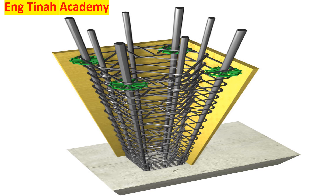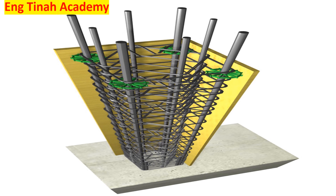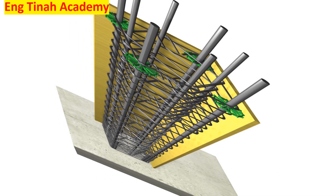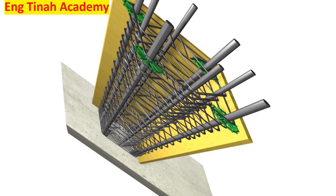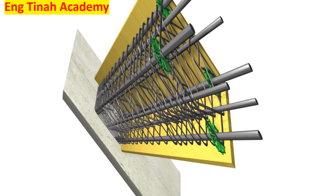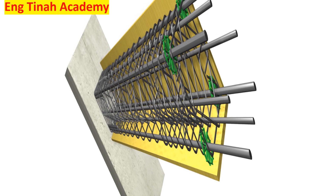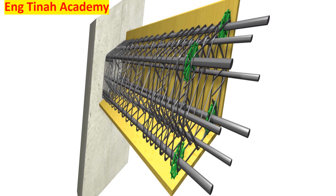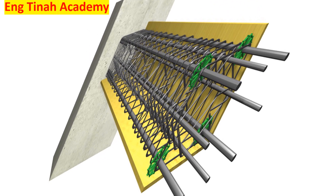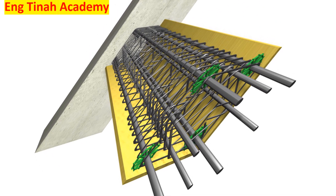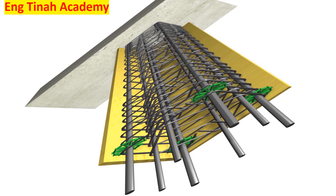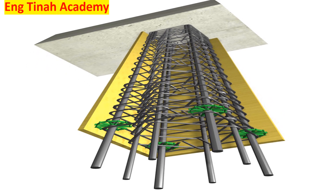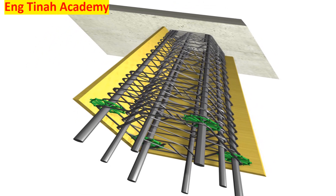Hello guys, we looked at how to calculate the quantity of steel in a slab, and today we want to look at how to calculate the quantity of steel we need in a column. We are going to calculate the length needed for the reinforcement bars and also look at the stirrups needed for the column. If you are new to this channel, kindly subscribe, and if you have subscribed, thank you for the support.